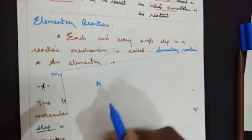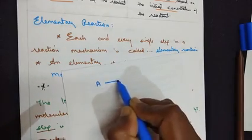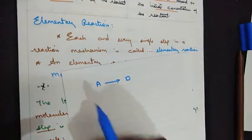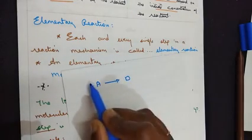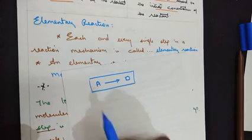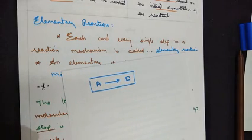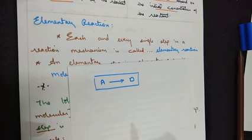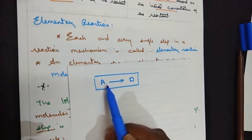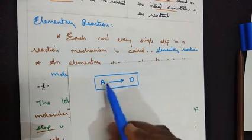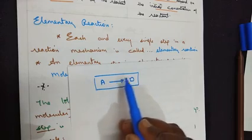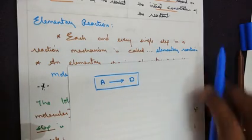Consider a reactant A giving us the product D. So A is the reactant and D is the product — this is the overall reaction. But in reality, no reaction takes place immediately as soon as you add the reactant; we don't get the product. There are so many other smaller reactions taking place within them.